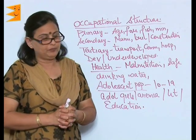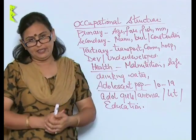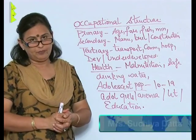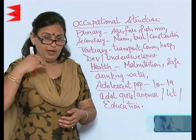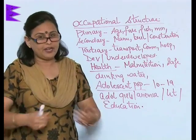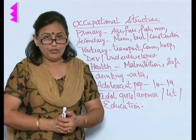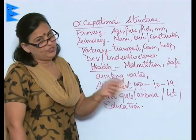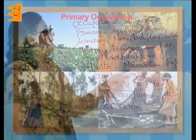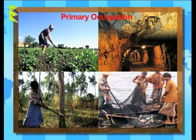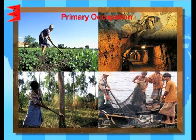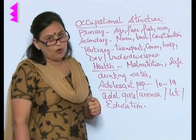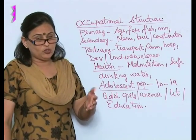Occupational structure refers to how many people engage themselves in what kind of occupation. Occupation can be divided into primary, secondary, and tertiary. Primary occupation involves agriculture, mining, fishing, and forestry — that is the primary occupation of the country.